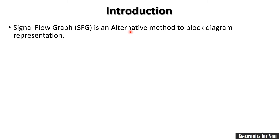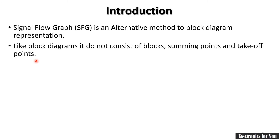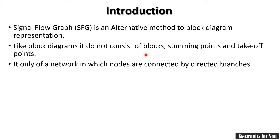Signal flow graph is an alternative method to block diagram reduction. We know that we can find the transfer function using block diagrams. Signal flow graph is also a graphical method, but unlike block diagrams which have summing points, takeoff points, and blocks, in signal flow graphs we have directed branches — directional branches in our signal flow graph.